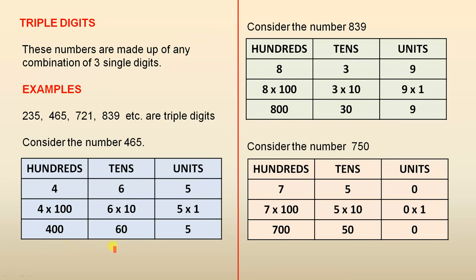So that's 465. You just add those 3 up, and you get 465, and that's the number we started with.